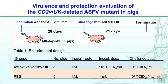To evaluate the virulence and protection of the mutant virus, 10 pigs were randomly assigned to two groups. One group was immunized with the mutant virus; the other group was immunized with PBS as a control. After 28 days, we challenged the pigs with the wild-type virus SY18 strain, and observed for 21 days. We examined clinical signs, recorded temperature, detected viral DNA in blood samples and nasal swabs by PCR, and examined the pathological lesions of the dead pigs.